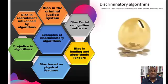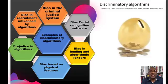Bias in lending when algorithms are used can also lead to discriminatory practices. Researchers have stated that banks that use algorithms within their lending practices gave Black and Latino borrowers higher interest rates on loans than other segments within the population.